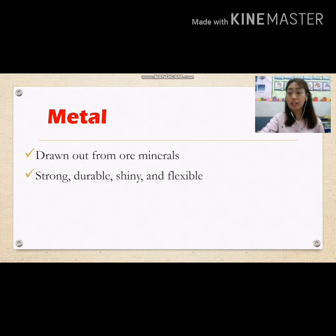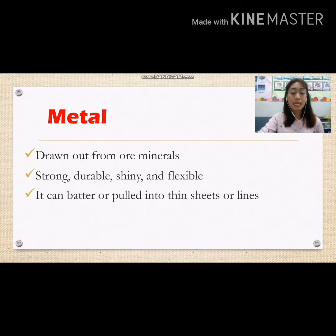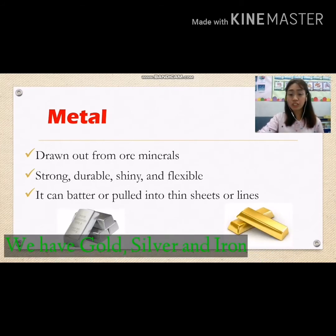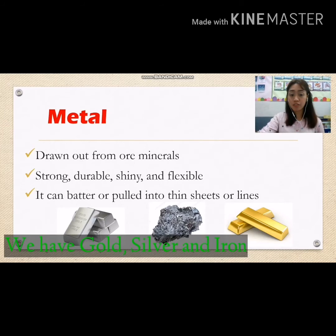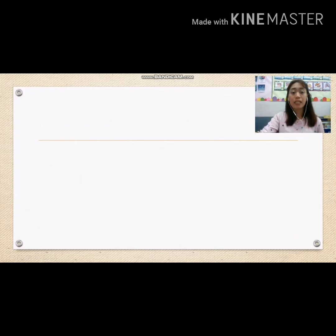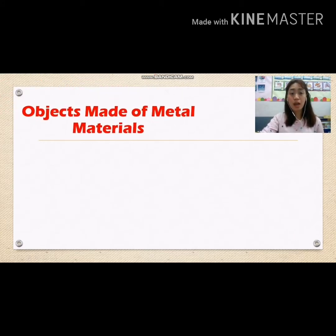Metal is strong, durable, shiny, and flexible. It can be hammered or pulled into thin sheets or lines. Examples of metal include gold, silver, and iron.